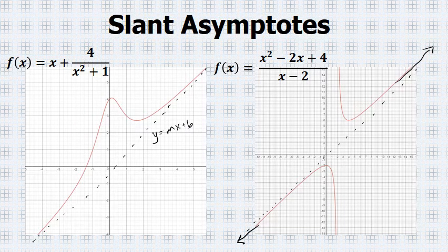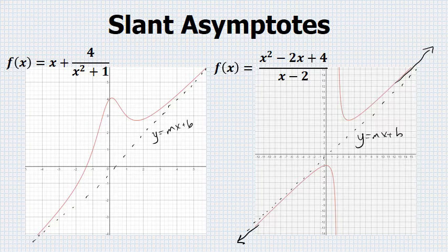This dotted line represents the slant asymptote, and again, slant asymptotes can be represented as a linear equation in the form y = mx + b.